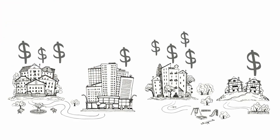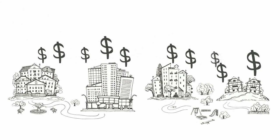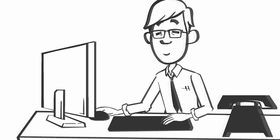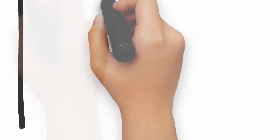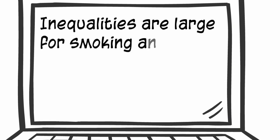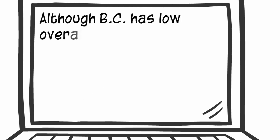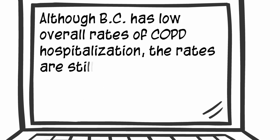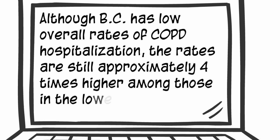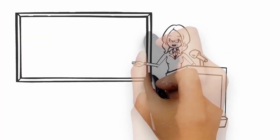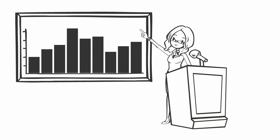Higher inequalities on either scale may signal a need to focus attention on reducing inequalities. After exploring the health inequalities interactive tool further, Joe is now ready to write his briefing note. Inequalities are large for smoking and COPD hospitalization and have widened over the past decade. Although BC has low overall rates of COPD hospitalization, the rates are still approximately four times higher among those in the lowest income level. By basing his analysis on both relative and absolute inequality data, Joe will ensure that his director has the tools she needs to make a more informed decision.